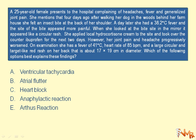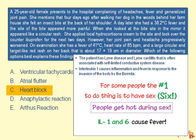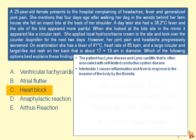That large circular target-like rash is reminiscent of Lyme disease. The question asks which finding best explains these findings among: ventricular tachycardia, atrial flutter, heart block, anaphylactic reaction, or Arthus reaction. The best answer is heart block. The patient most likely has Lyme disease with Lyme carditis, which is often associated with self-limited conductive system disease including heart block. Interleukin-1 and interleukin-6 cause inflammation and fever in response to invasion by Borrelia, the causative agent of Lyme disease.